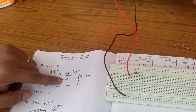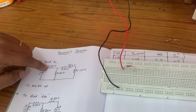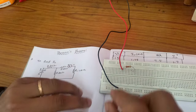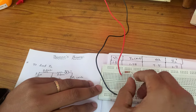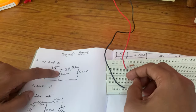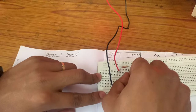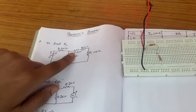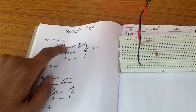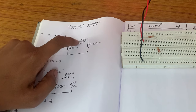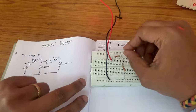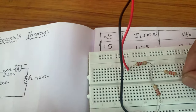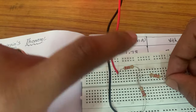Next, one more 2.2 kΩ resistor — its first terminal is connected to the junction terminal. Now I am taking one more 2.2 kΩ resistor; its second terminal is connected to ground. One more 2.2 kΩ resistor first terminal is connected to the junction point, and its second terminal is connected to the ammeter positive.